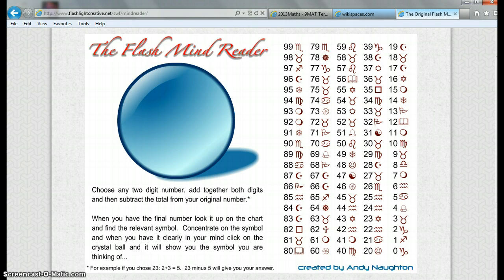Add the digits together. For example, 29, I add 9 plus 2 and I get 11. Then subtract the total from your original number. So I go 29 minus 11, and that's going to give me 18. So I'd have 18 in my mind.